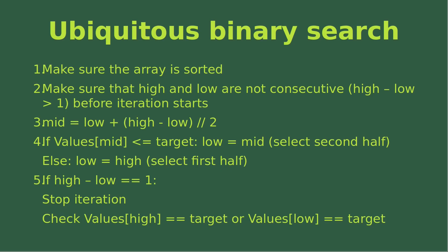Number four: if the mid-index returns a value that is smaller than or equal to the target, then I set the low index to become the mid-index. In this case, I select the second half of my array to be searched. If that fails, I set the high index to become the mid-index, selecting the first half of the array. This iteration process will decrease the number of elements to be searched.